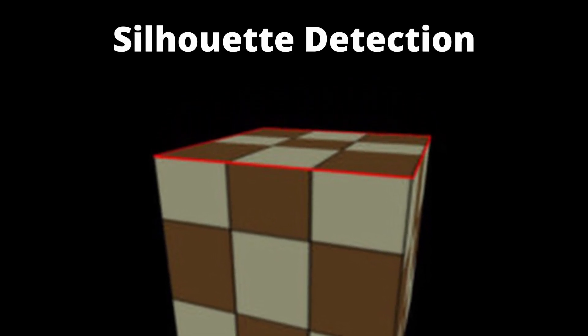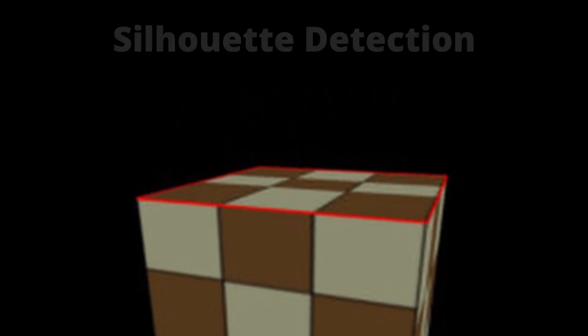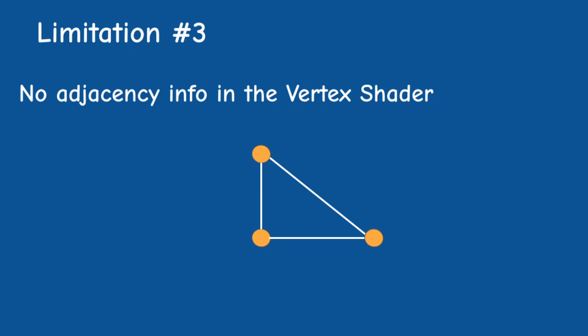This makes it easier to implement techniques such as the silhouette detection of an object. And finally, the geometry shader unlocks the potential of a set of new topology types that provide access to the adjacent vertices of the current primitive, which provides even more contextual information to the GS. This capability is also useful for silhouette detection, which will also be covered in a future video.